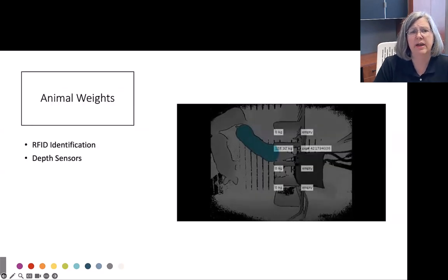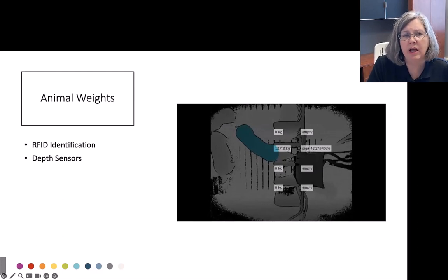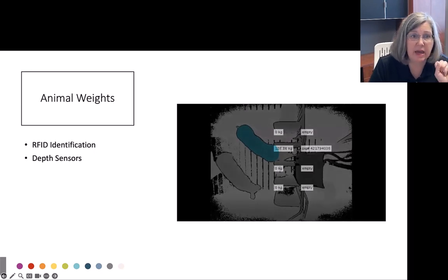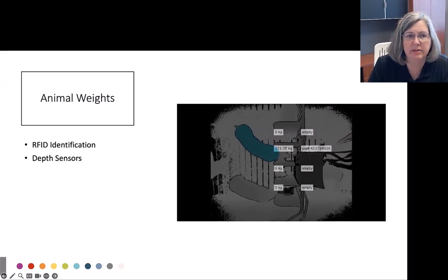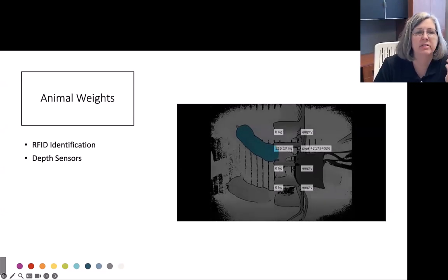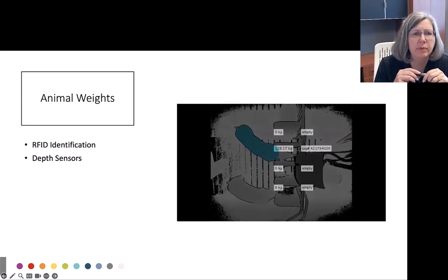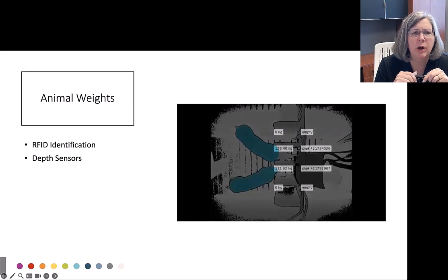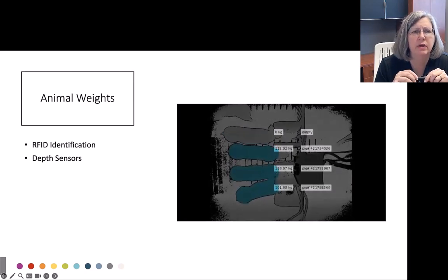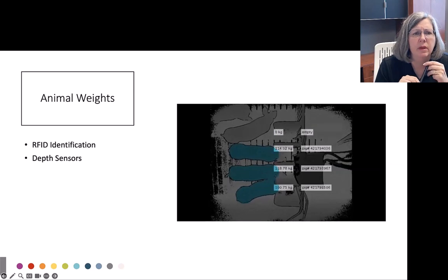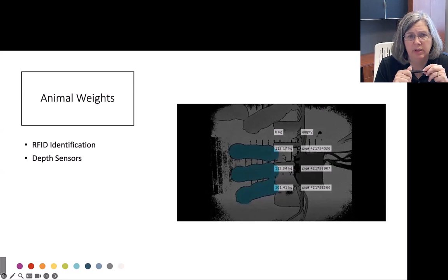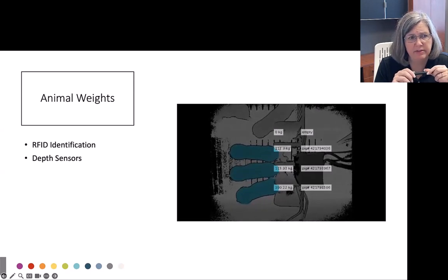This is a short video that looks at how this would work. We would not record this video, we would just capture the weights. But you can see as the animal comes it can continually collect weights. You can see that weight is varying a little bit depending on how the animal is standing but it's pretty close to about 129 kilograms, which is around market weight, about 250 pounds. Since we have four nipple drinkers we can capture weight of four pigs at the same time.